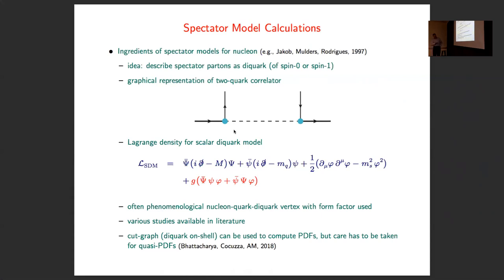In the scalar diquark model you can write a simple phase-space density. The essential part is just the coupling between the diquark. What is often done — not always — is that people rather than using point-like coupling introduce a form factor with some parameters giving additional freedom. This is actually not what we do in our calculation of GPDs.